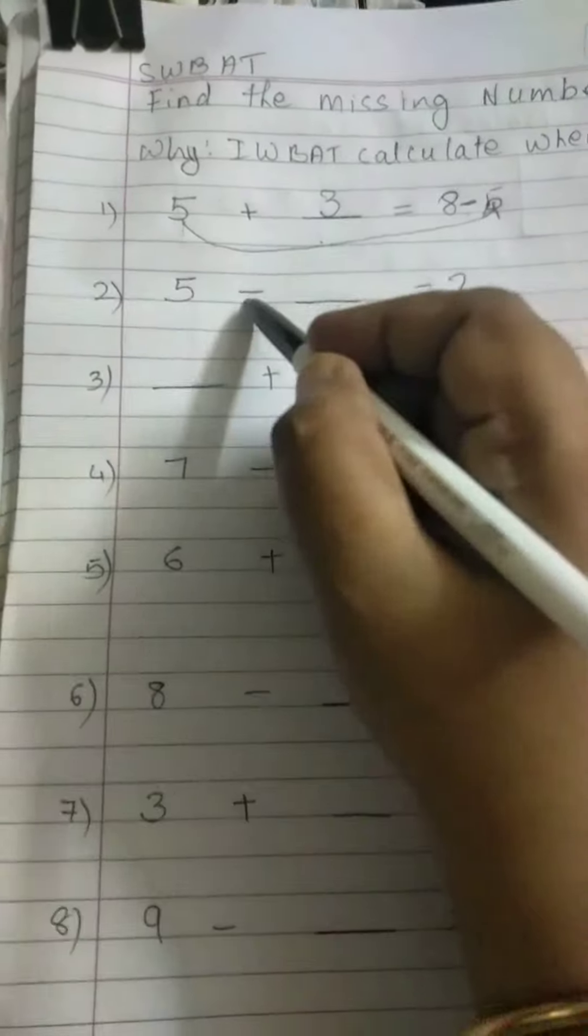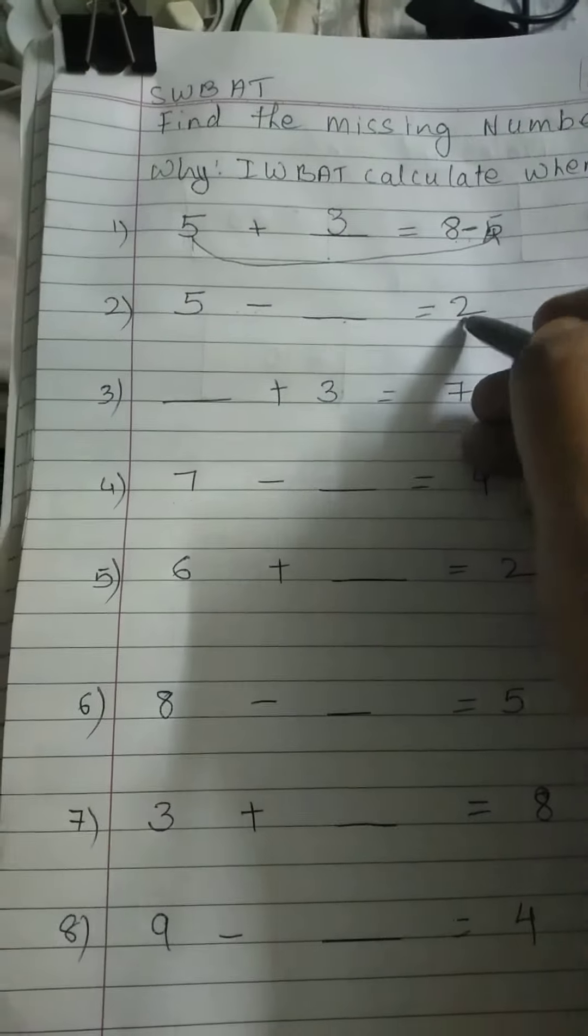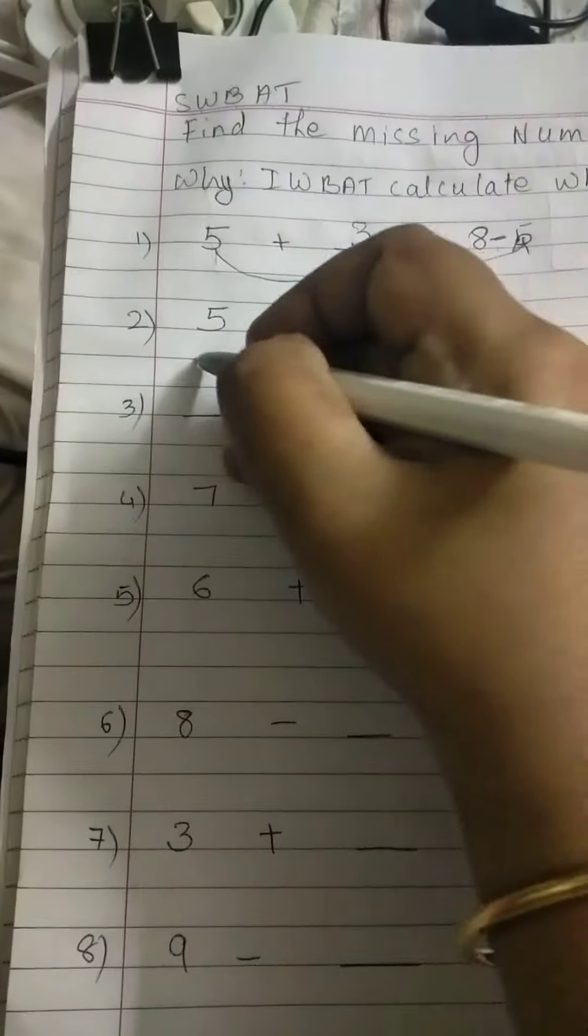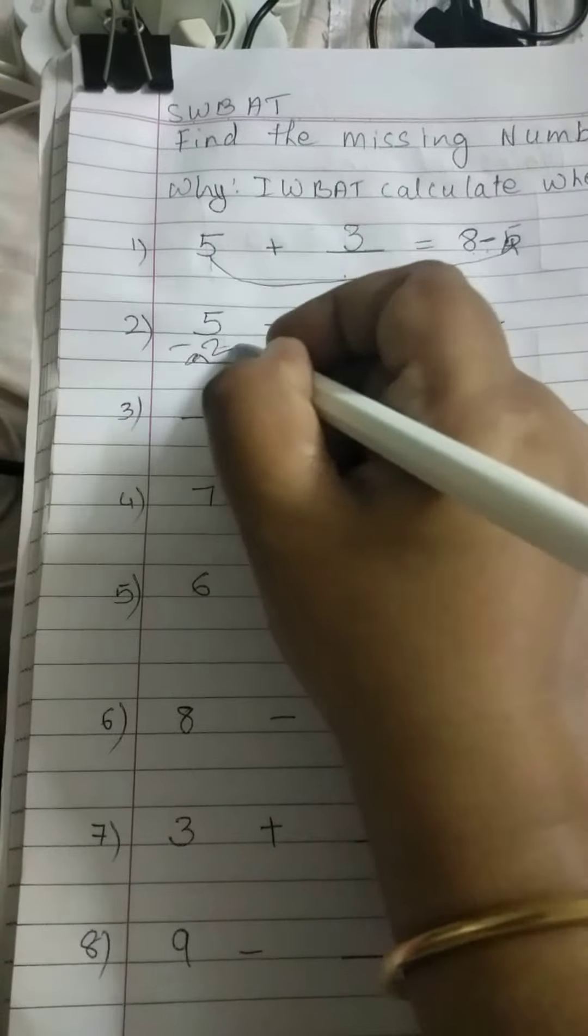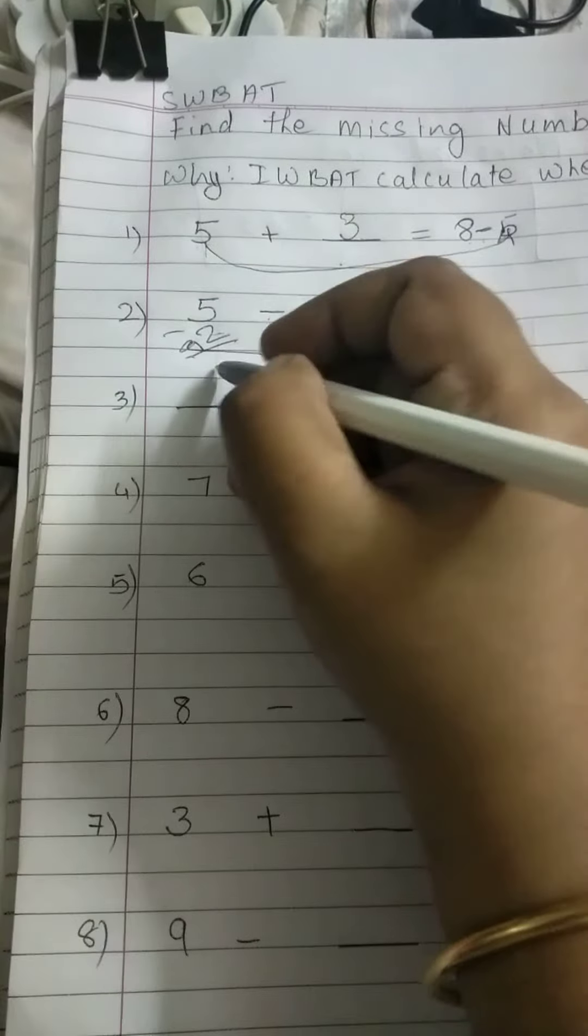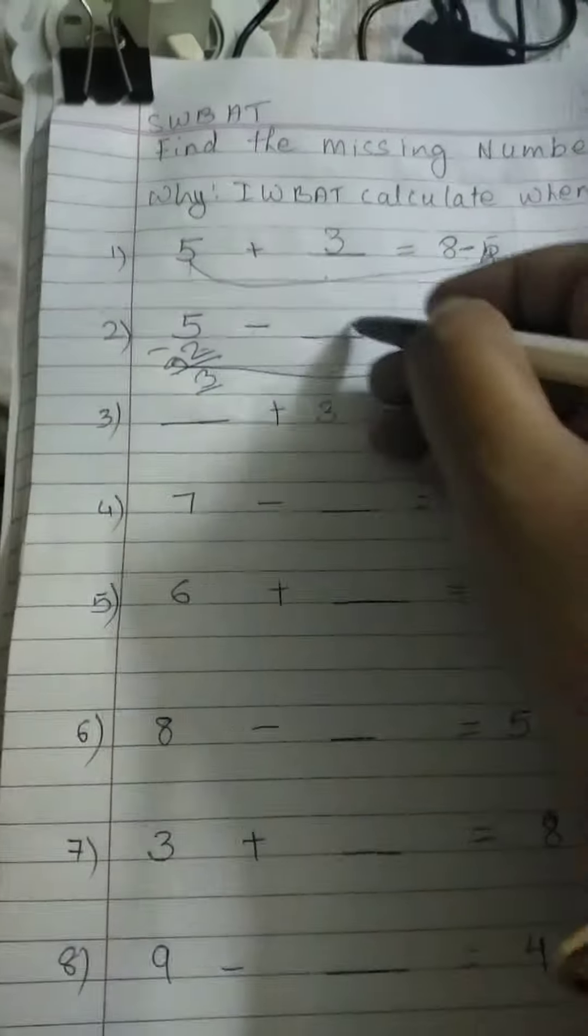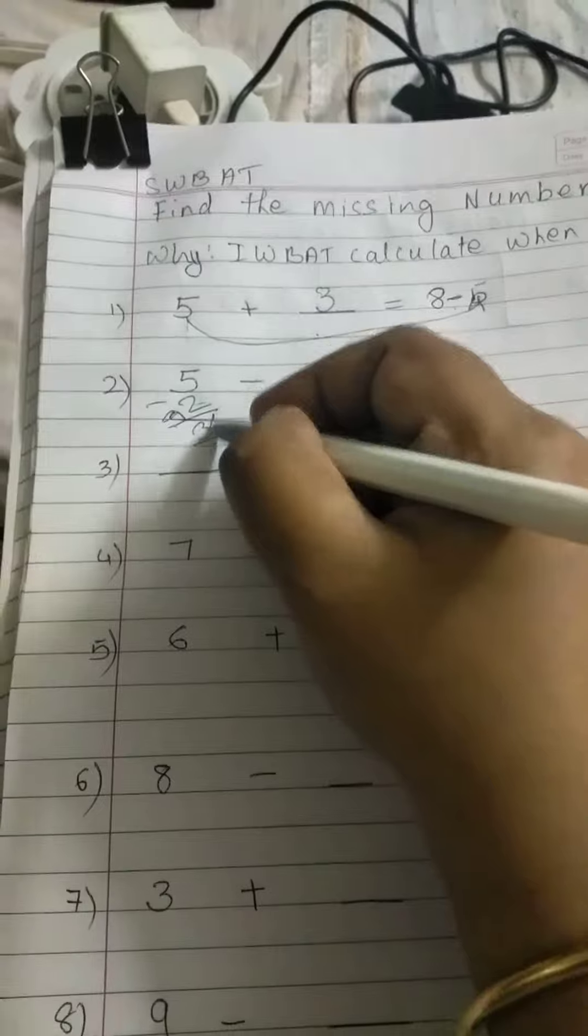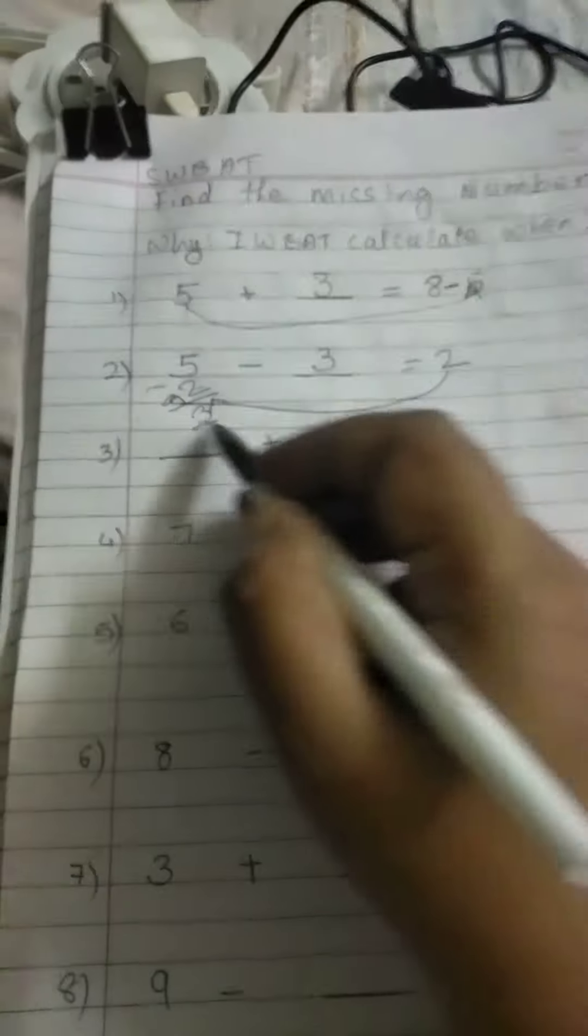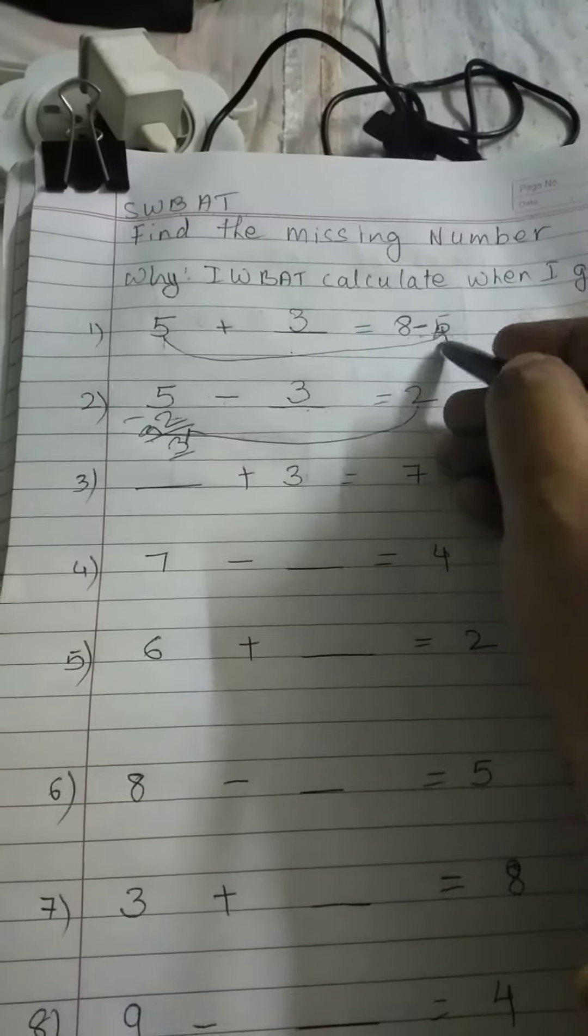Now second one we'll look at the sign when the sign is minus what do we do this 2 will come this side right so 5 minus 2 is 3 so what will be this answer 3 okay so 5 minus 3 will give me 2 right in this case 2 comes this side and in this case when there is addition this goes this side